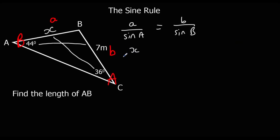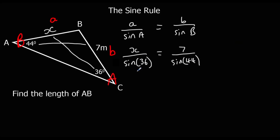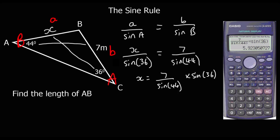Substituting into the formula: x over sine 36 equals 7 over sine 44. To get rid of sine 36, we times both sides by it, so x equals 7 over sine 44, times sine 36. We type that into the calculator, and to three significant figures, that's 5.92 meters.